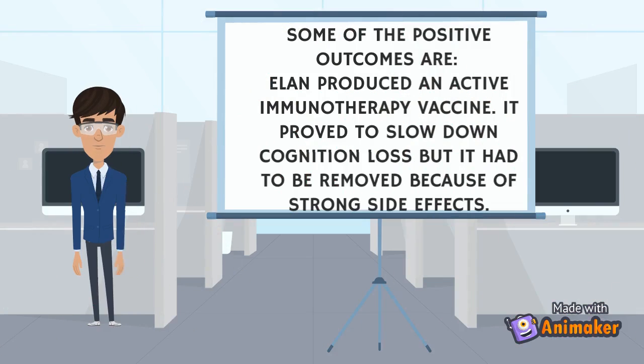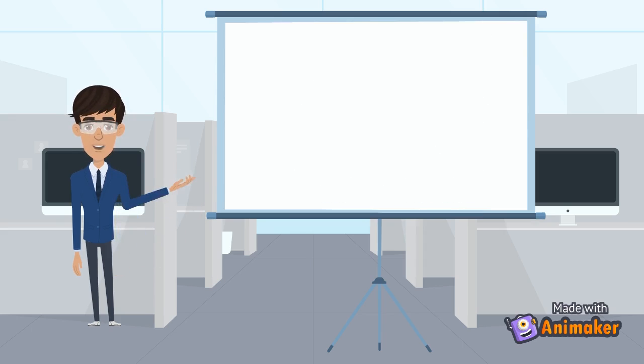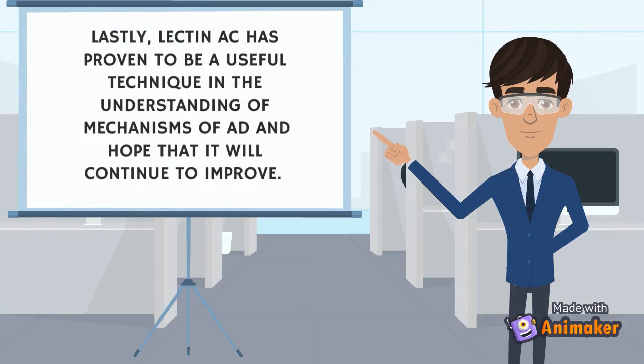Now that we're back in the office, let's wrap this topic up and talk about the positive outcomes of using lectin affinity chromatography for the development of some kind of treatments. So Elan, a company, produced an active immunotherapy vaccine and it showed to slow down cognition loss. Unfortunately, it had to be removed because of the strong side effects it brought with it. Although the positive outcome was short-lived doesn't mean that we should give up just yet. We have seen how lectin affinity chromatography has been an amazing tool in helping us build up proteomes in order to understand where the cuts are being made and maybe what enzymes are responsible for the different cuts in people with Alzheimer's. And that over time, as we build up more proteomes, our understanding will improve to the point where we can produce medicine that doesn't have severe side effects.